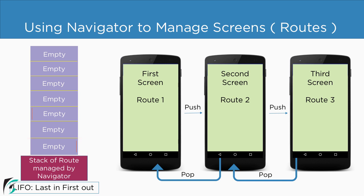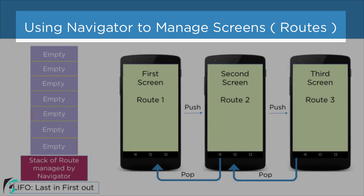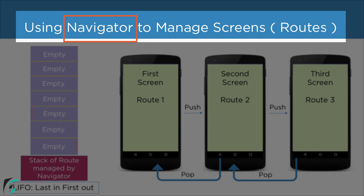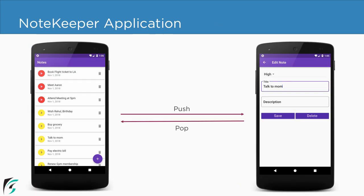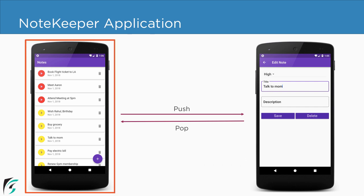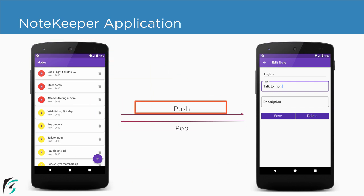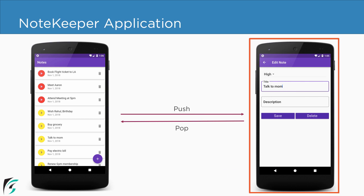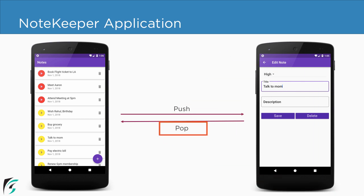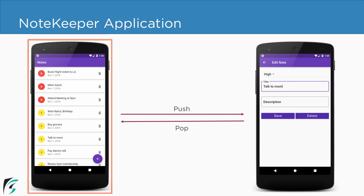Now the question arises: who manages the screens or the routes? It is managed by a special widget known as the Navigator. Using Navigator you can perform the push and pop operations. In context of our Notekeeper application, from the first screen — the NoteList screen — we perform the push operation to navigate to the NoteDetail screen, and then perform the pop operation to navigate back to the first screen.